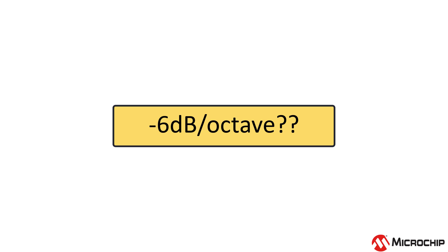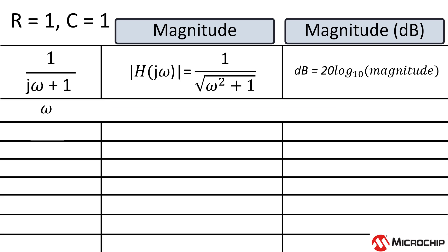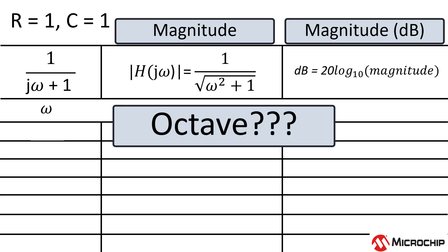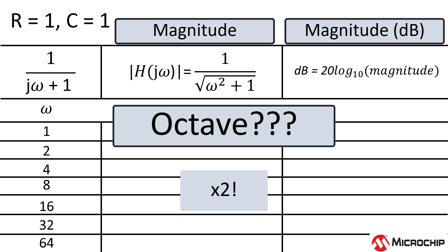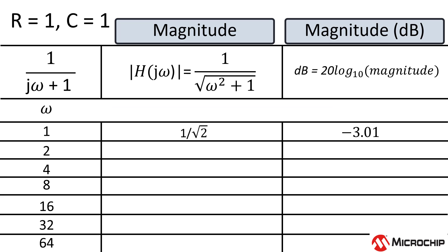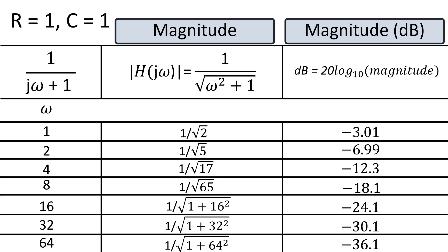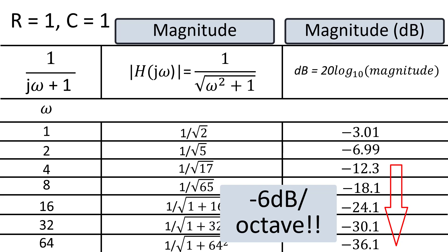If you're wondering where minus 6 dB per octave comes from, let's fill in this chart and find out. An octave is actually times 2 — I thought it would be times 8, you know, octave, octagon, octopus — but it's times 2. Let's confirm: when the frequency is 2 the magnitude is about minus 7 dB, when the frequency is 4 it's about minus 12 dB, when the frequency is 8 it's about minus 18 dB, and so on. We can start to see the minus 6 dB per octave as we get further away from the cutoff frequency.